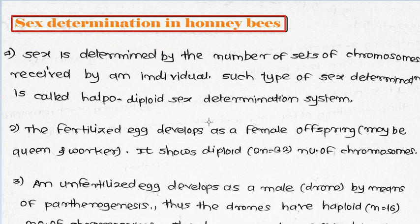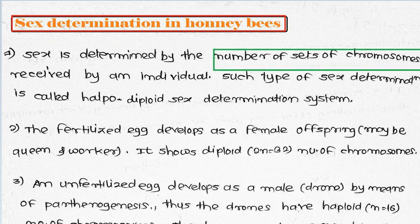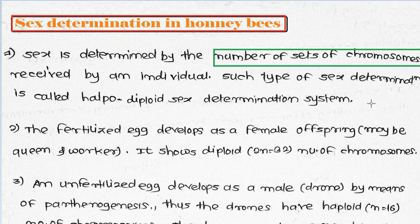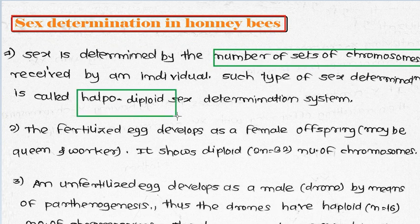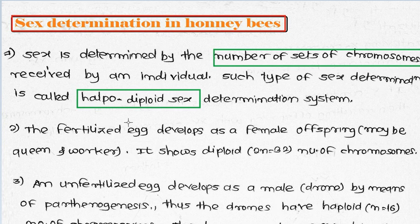The third is sex determination in honeybees. Honeybees have a special type of sex determination. Here, sex is determined by the number of sex chromosomes - meaning sex determination is done based on the number of chromosomes received by an individual. This type of sex determination is called haplodiploidy sex determination.